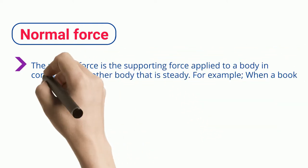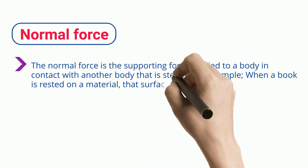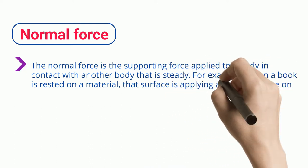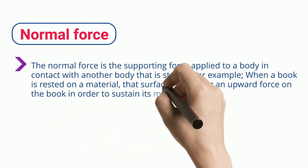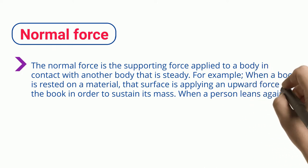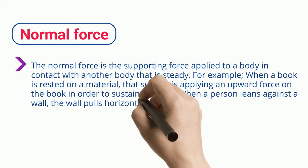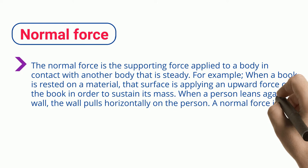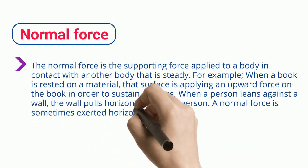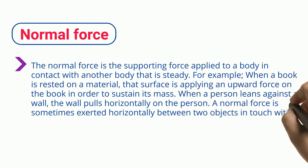For example, when a book is rested on a material, that surface is applying an upward force on the book in order to sustain its mass. When a person leans against a wall, the wall pulls horizontally on the person. A normal force is sometimes exerted horizontally between two objects in touch with one other.